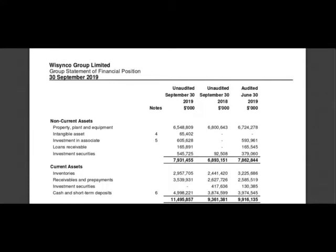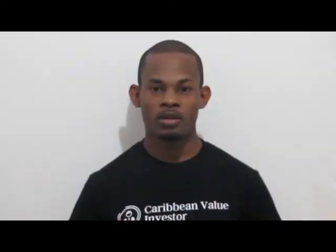The non-current assets are those things that the company owns and holds for a long time. They're typically used in the normal course of business — for example, buildings, warehouses, equipment and other things that have not reached their end of life. Later on, we're going to see how we use these different aspects of the assets to calculate what we call the current ratio or the quick ratio.